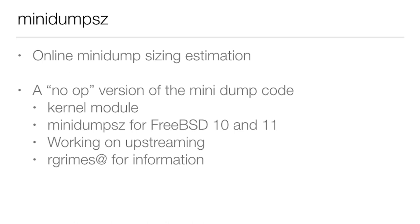Mini-dump sizing is an extension you can use to estimate how large a mini-dump will be — a small part of that online dump sizing estimation that Illumos has. It works as a no-op version of the mini-dump code. It's a kernel module that works for FreeBSD 10 and 11, and we're working on upstreaming it. I've used it in production and it works.